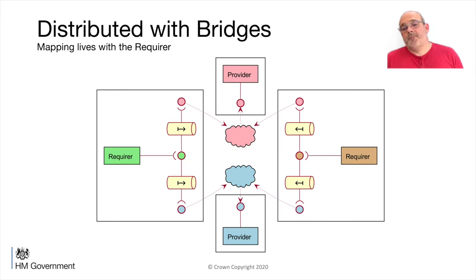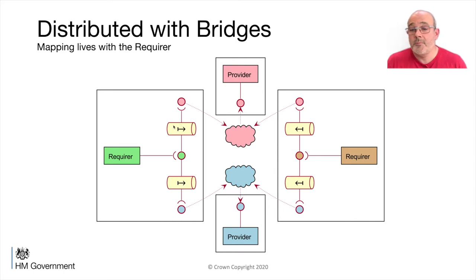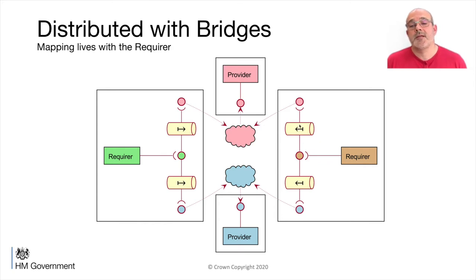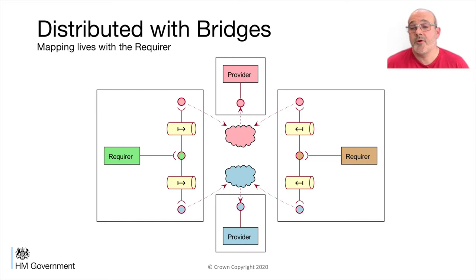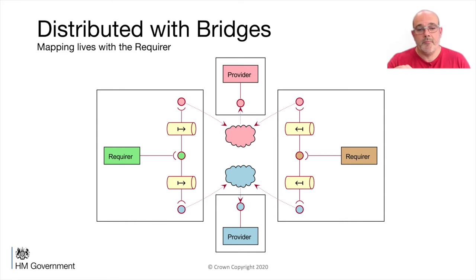So if we now distribute it, we've got a number of different ways we can deploy this. We can deploy the mappings with the requirers, so they'll probably be in the same process or deployed on the same box. They will send the message onto the network in the language of the two providers. This is generally how our MASL architecture works - the terminator services get built into a process with their requirer domain, and they convert the message. The messages that go out on the network are in the language of the domain services on the provider domains.